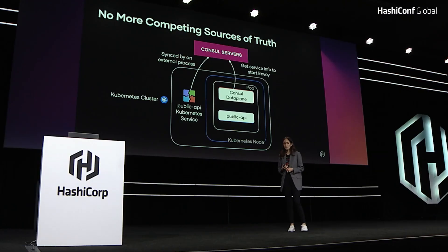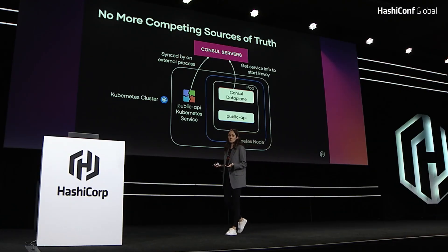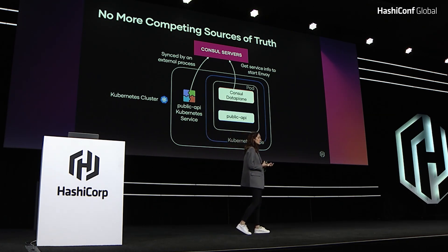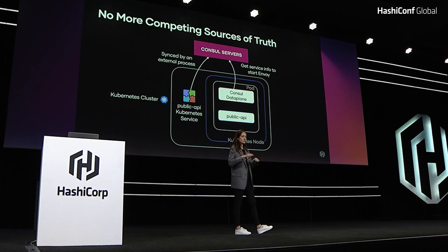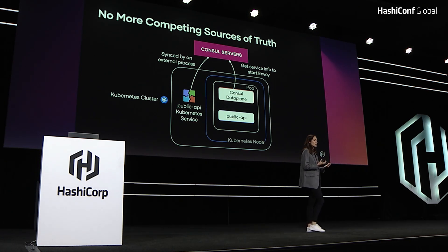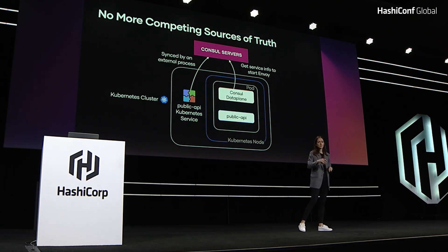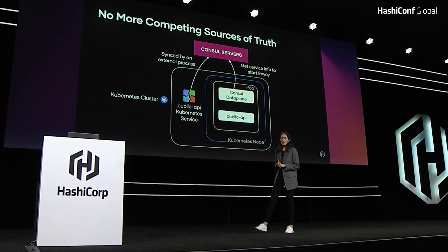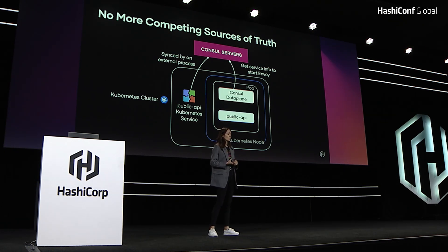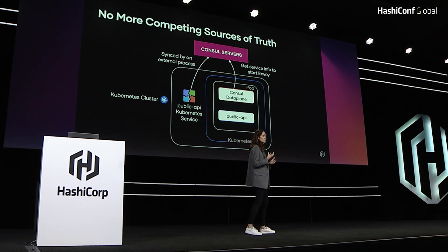How does Consul data plane help us solve all those problems? Well, the first problem was that Consul clients were the source of truth for everything. By removing Consul clients, we no longer have that. There's no competing source of truth — if you're running in an orchestrator, we'll use your orchestrator as the source of truth. We'll sync your service into Consul servers, and then the new component, Consul data plane, will talk to Consul servers directly to discover anything it needs to start Envoy.